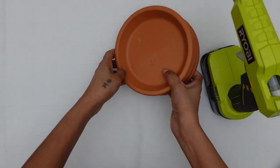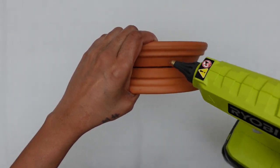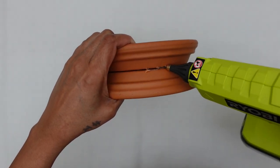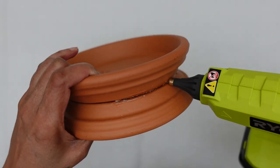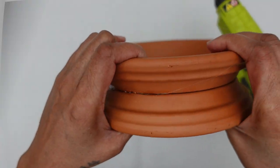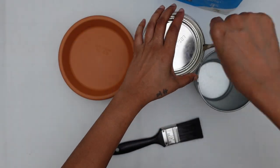Once both of my saucers were stuck together, I then ran my glue gun around it to ensure a stronger hold. Now my base for the hurricane is done. Now it's ready for a coat of paint.